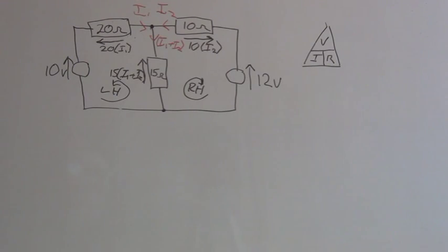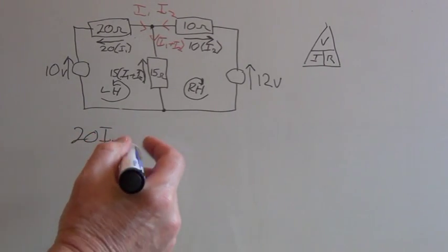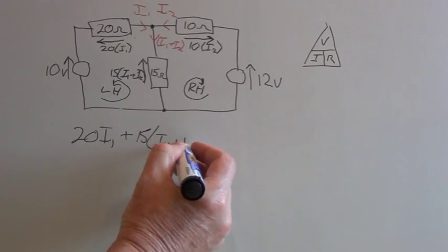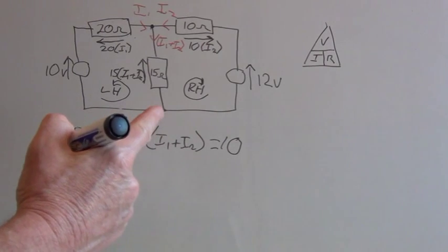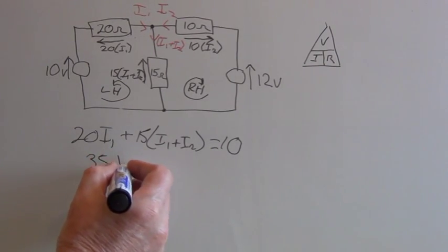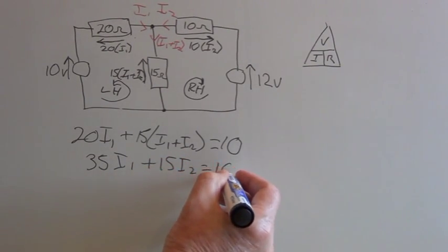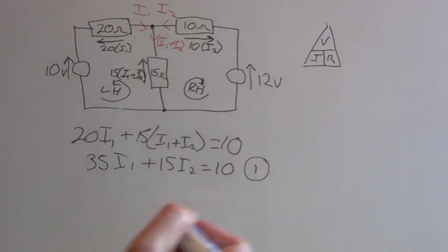So for the left hand loop, we have 20 I1 plus 15 times I1 plus I2 equals 10. Now if we multiply out the brackets and collect the like terms, we have 35 I1 plus 15 I2 equals 10. So we have our first equation there, so I'll label that number one.